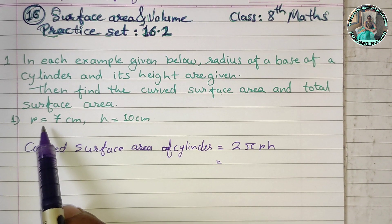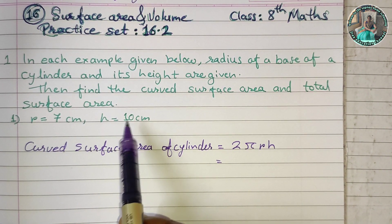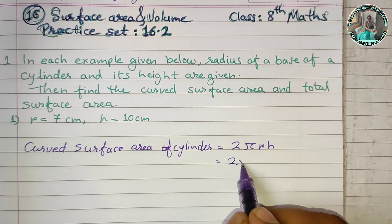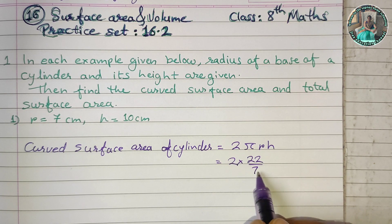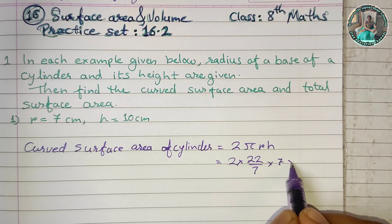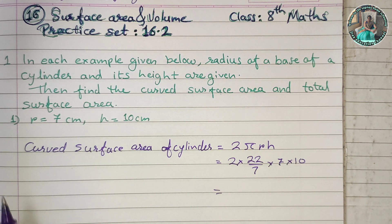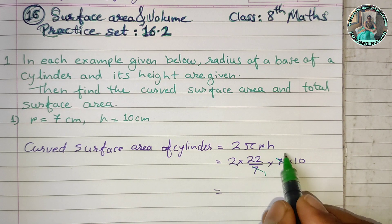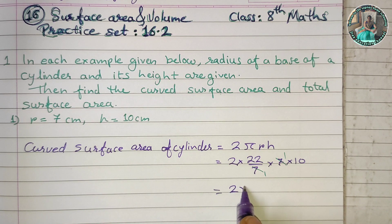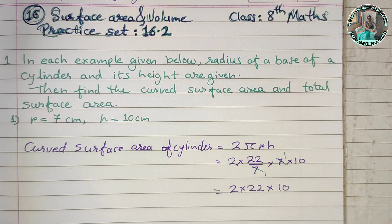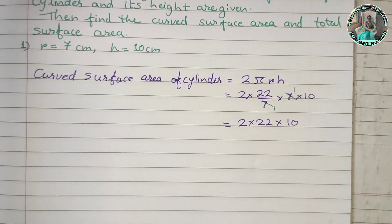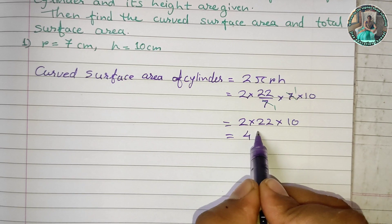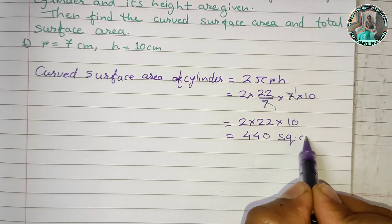The first question: radius is 7 cm and height is 10 cm. Using the curved surface area formula 2πrh: 2 × (22/7) × 7 × 10. The 7s cancel, giving 2 × 22 × 10 = 440 sq cm.